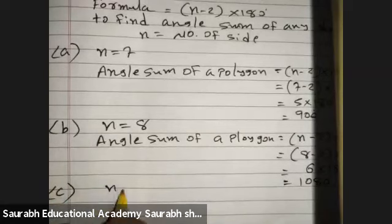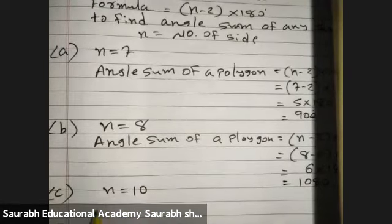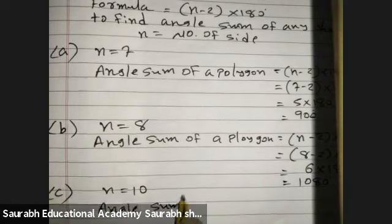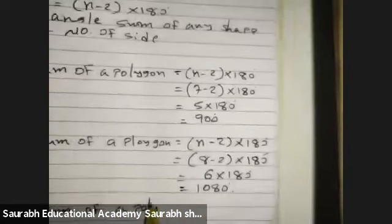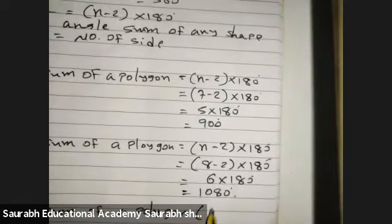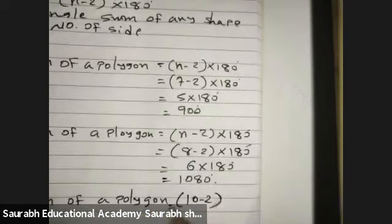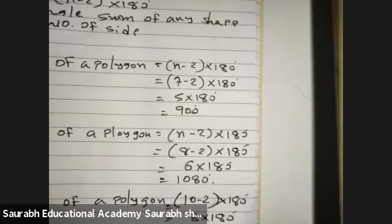N is equal to 10, meaning 10 sides. So the angle sum will be: 10 minus 2 into 180, that is 8 into 180, which equals 1440.